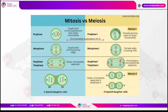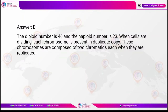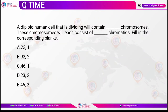Question: A diploid human cell that is dividing will contain how many chromosomes, and these chromosomes will each consist of how many chromatids? In a human cell that is dividing, the cell will contain 46 chromosomes and each of these chromosomes will consist of two chromatids. The answer is E.